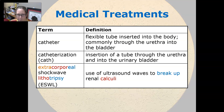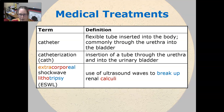A catheter is a flexible tube that is inserted into the body. It is commonly through the urethra into the bladder, but catheters can be inserted in all kinds of other places. Catheterization, or a cath, is the insertion of a tube through the urethra and into the urinary bladder.